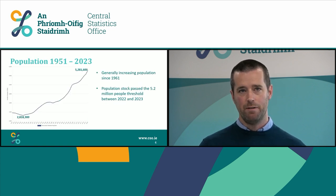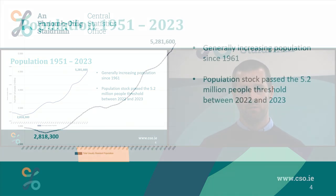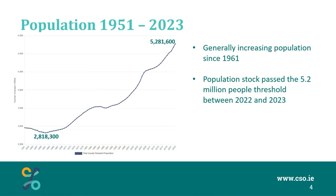The line chart on the left tracks the population from 1951 to 2023. You can see that there is generally an increasing population since the low point in 1961, which was just above 2.8 million people. Population stock passed the 5.2 million people threshold between 2022 and 2023, and the usually resident estimate for 2023 now stands at just below 5.3 million people.